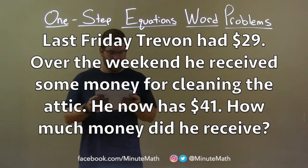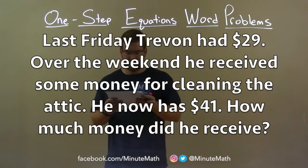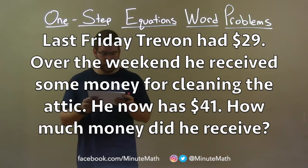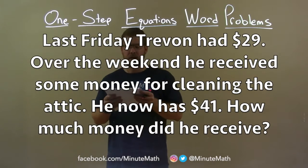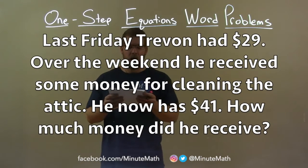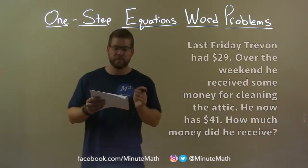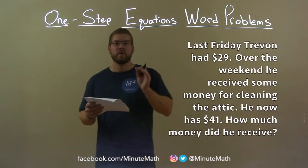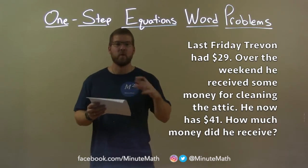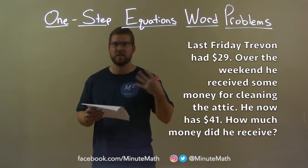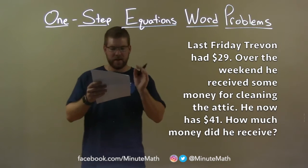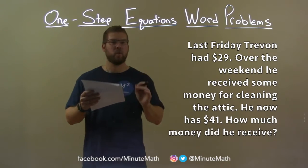Last Friday, Trayvon had $29. Over the weekend, he received some money for cleaning the attic. He now has $41. How much money did he receive? We want to take that information and create an equation. He now has $41.